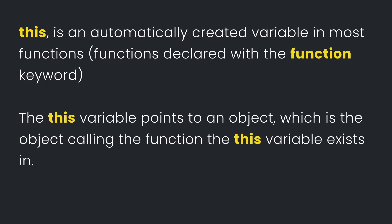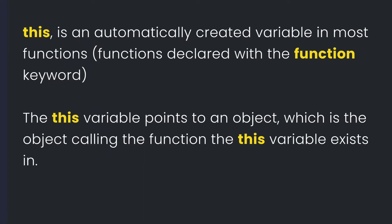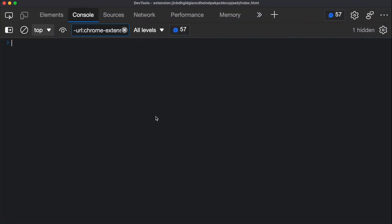'This' is an automatically created variable in most functions and this variable usually points to an object depending on the object that is calling that function. Sometimes it might be confusing knowing what object the 'this' variable is pointing to, so in this video I'll be simplifying that so you can easily know what object it is pointing to.